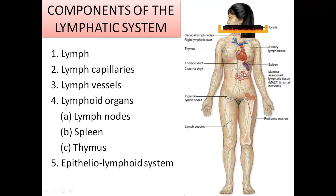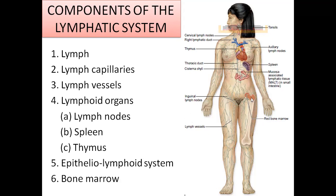Apart from lymph nodes, we also have lymphoid organs. In the chest region, in the superior mediastinal region behind the sternum bone in the upper part, you will see one more lymphoid organ called the thymus. So we have lymph nodes, spleen, and thymus. The epitheliolymphoid system will also be discussed in detail. Bone marrow is also one of the components of the lymphatic system.